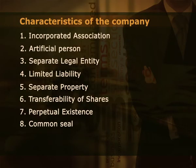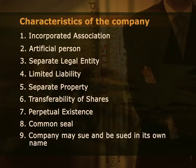Members may come and members may go, but the company can go on forever. Eighth, common seal. Common seal is the official signature of the company because a company cannot sign like a natural person. Ninth, a company may sue and be sued in its own name. One of the consequences of separate legal entity is that a company may sue and be sued in its own name.